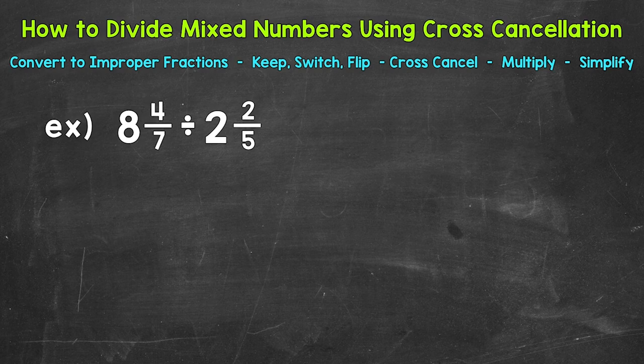We use cross cancellation when we get to the multiplying step, so keep that in mind. The first thing we want to do is convert these mixed numbers to improper fractions, so that we just have a numerator and a denominator and we can move forward with our steps.